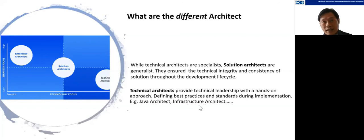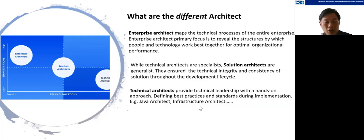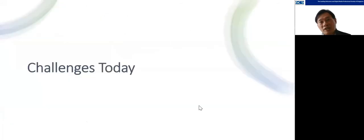What is an enterprise architect? There's a lot of misconception around EA. Many of my IT and non-IT colleagues have the perception that EA is just a solution architect at an enterprise level. The correct definition: an enterprise architect maps the technical processes of the entire enterprise, with a primary focus to review how people and technology work together for optimal organization performance. The definition doesn't talk about anything purely technical — it's about how people and technology can work together, transforming your organization holistically across people, process, and technology.